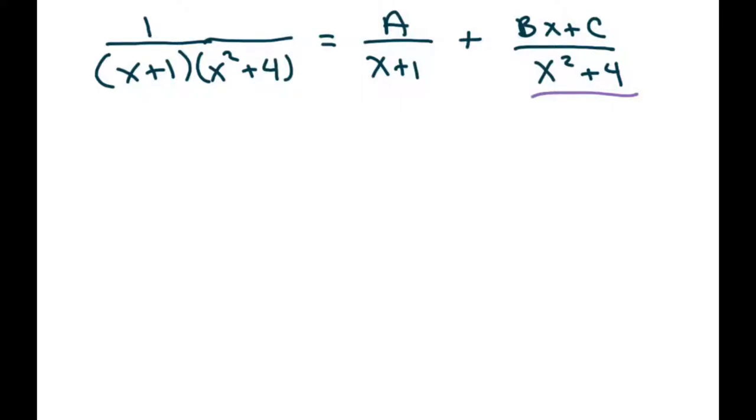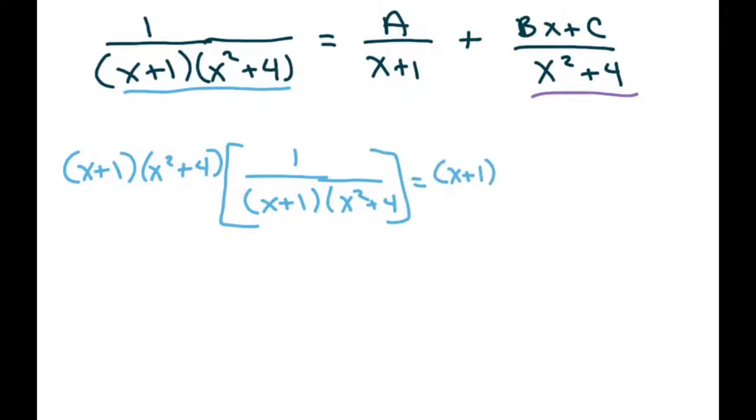The first thing we're going to do is clear the fractions by multiplying by our least common denominator, which is right here. So we're going to take (x+1)(x²+4) times the left side, and then do the same for the right side. This is going to be A/(x+1) + (Bx+C)/(x²+4).